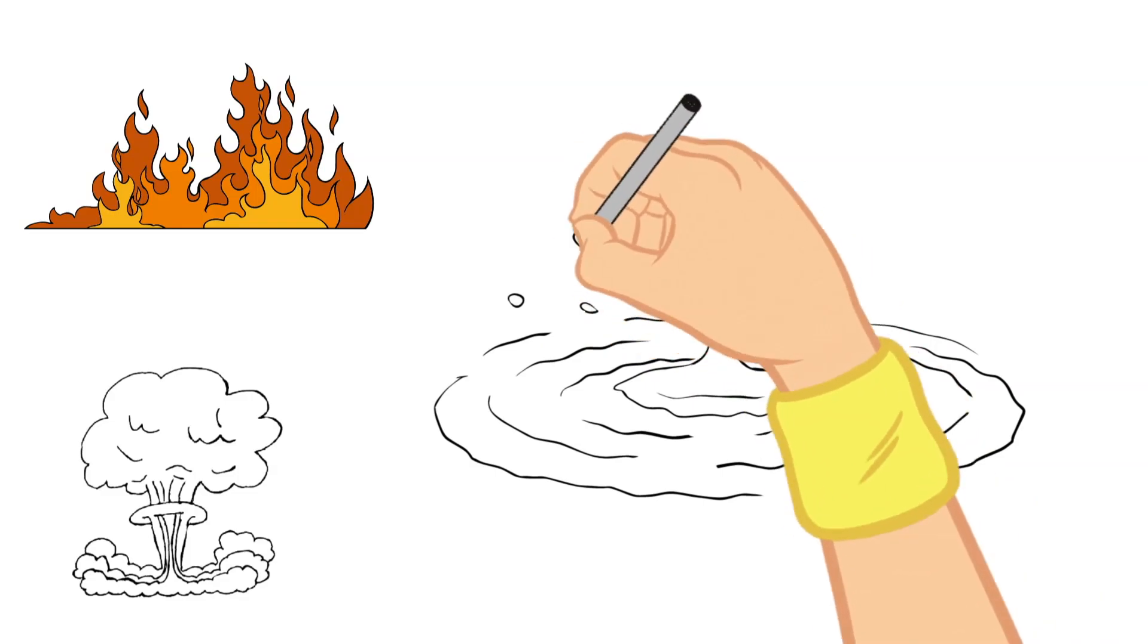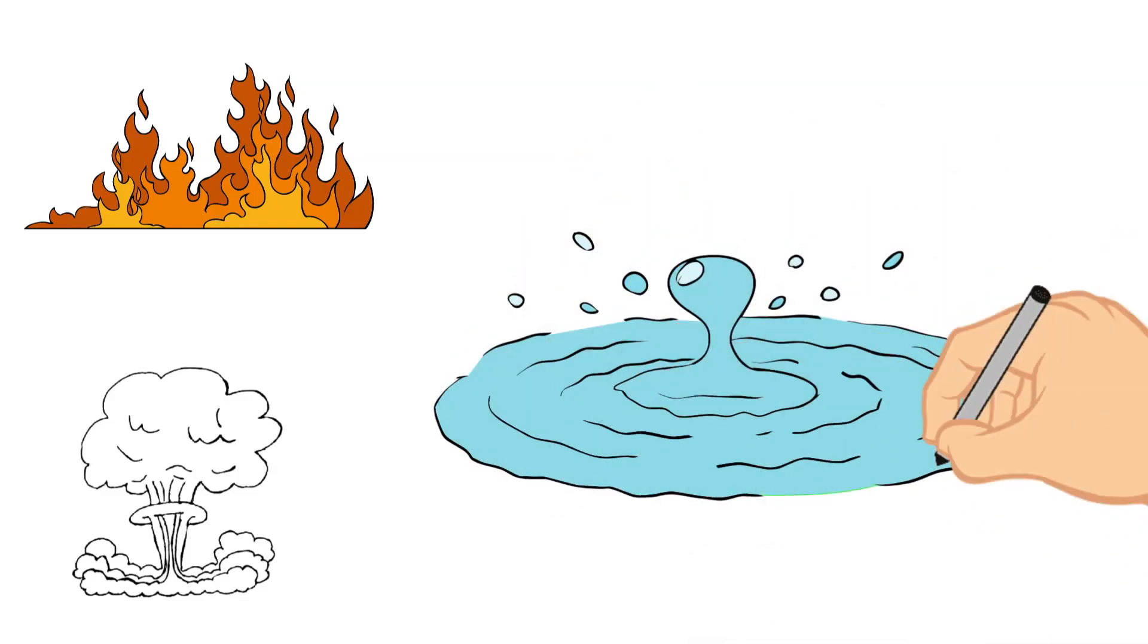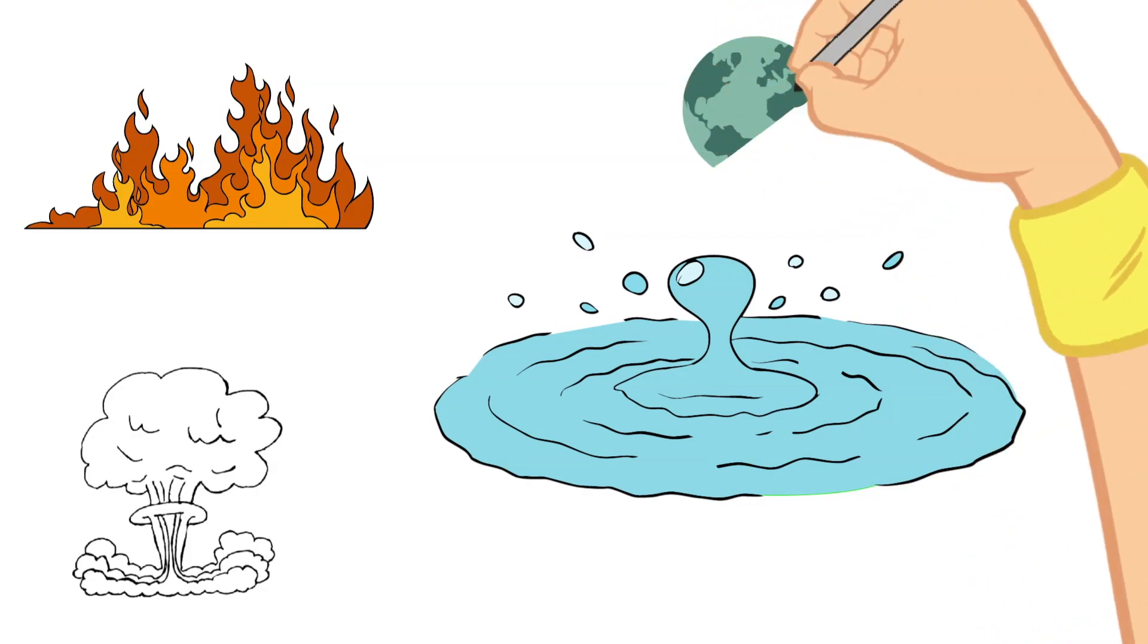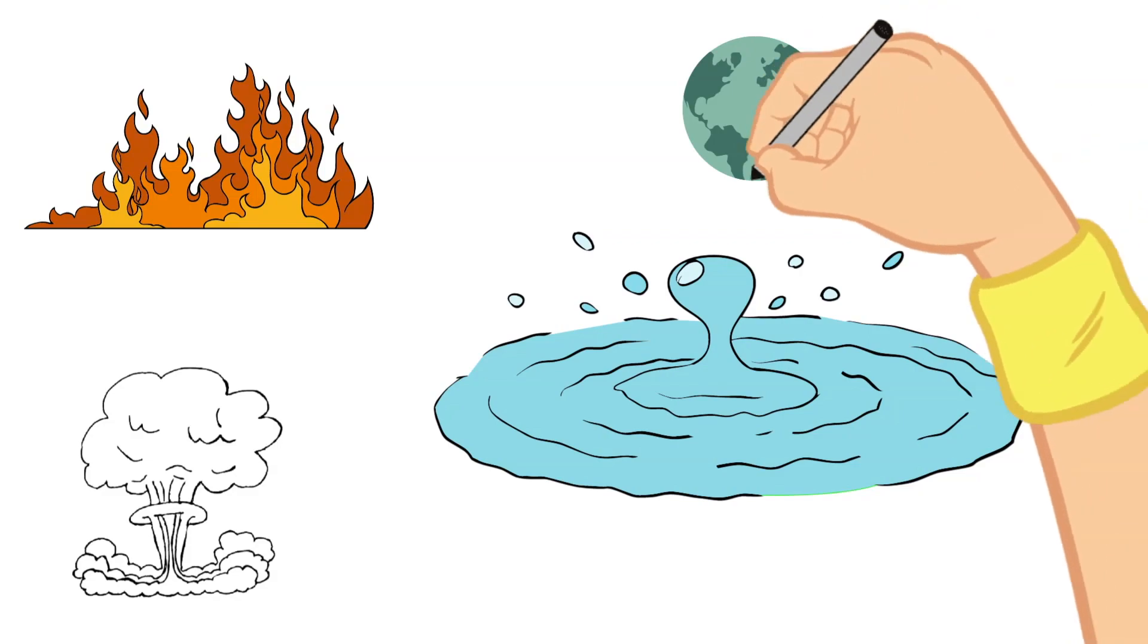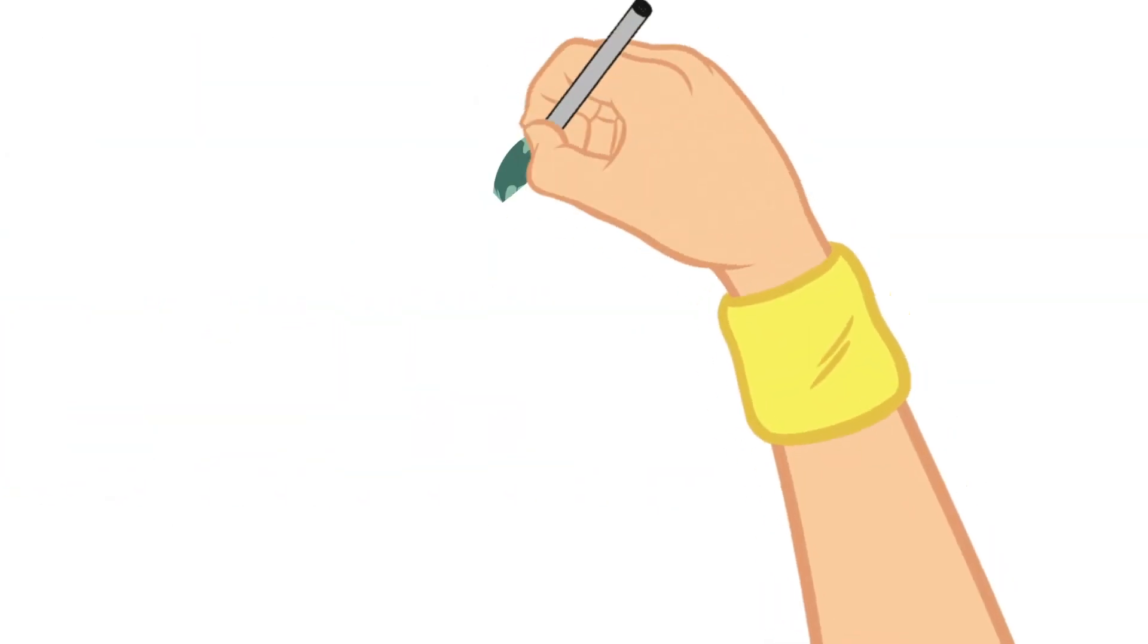It is water or H2O. And this is the most common place we find hydrogen on earth, in our water. Each water molecule contains two hydrogen atoms and one oxygen atom hence the name H2O. There are other places that hydrogen is found on earth but water is by far the most abundant.